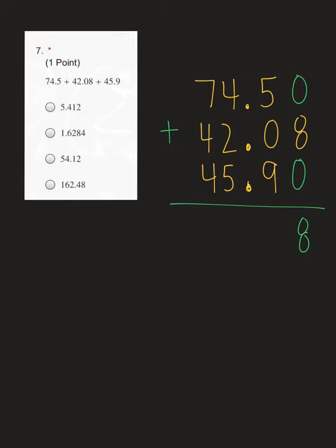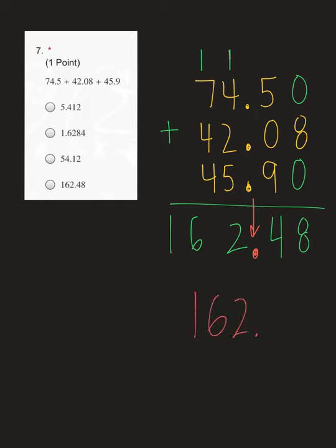Now we're ready to add. 0 plus 8 plus 0 is 8. 5 plus 0 plus 9 is 14 — drop your 4, carry a 1. 1 plus 4 is 5. 5 plus 2 is 7. 7 plus 5 is 12 — put your 2, carry a 1. 1 plus 7 is 8. 8 plus 4 is 12. 12 plus 4 is 16 — drop your 16 straight down. Decimals should be perfectly lined up, so our final answer should be 162.48, which would have been answer option D on your form.